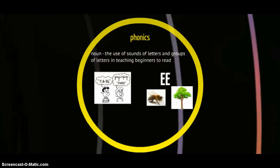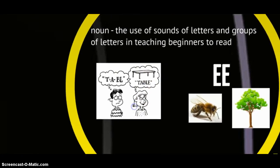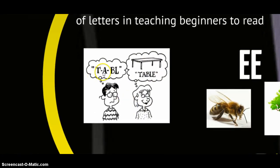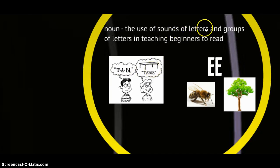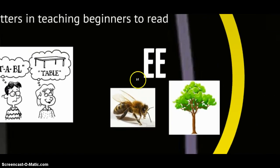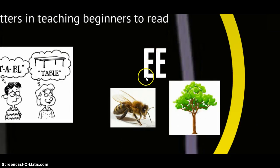Then we have phonics — also a noun. The use of sounds of letters and groups of letters in teaching beginners to read. We have little kids learning to say the word 'table,' sounding it out because they know the sounds that individual letters and groups of letters make. Sometimes we teach them groups of words to help them remember — the double E sound we find in the words 'bee' and 'tree.' The teacher used phonics to teach the children to sound out words.